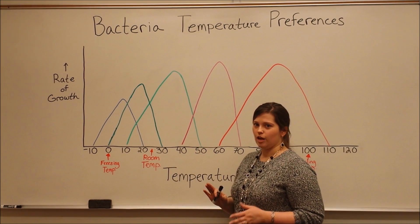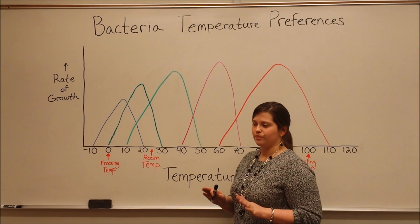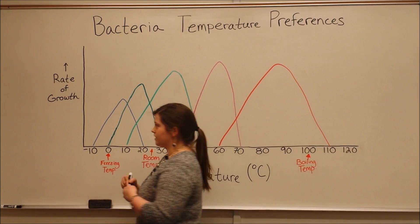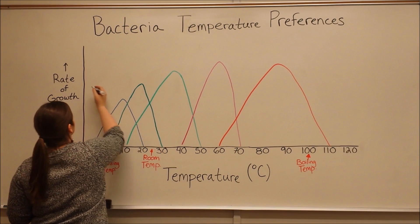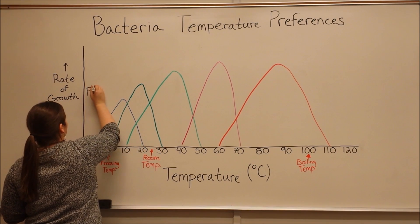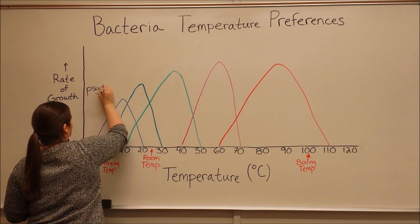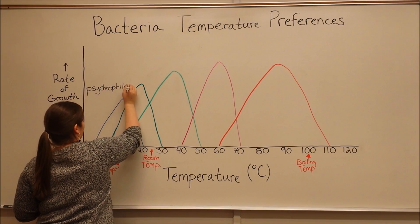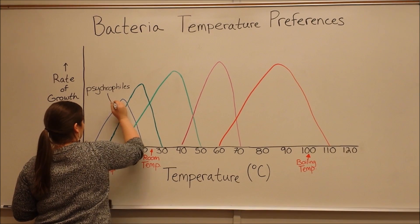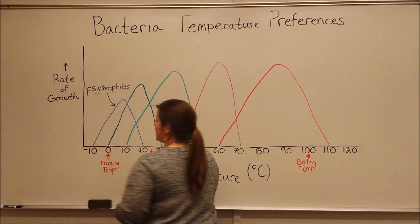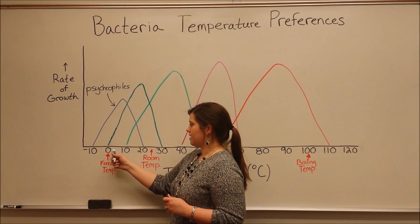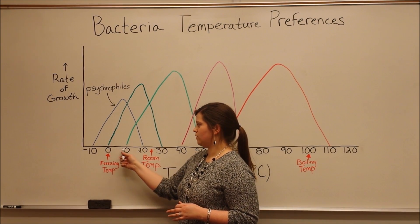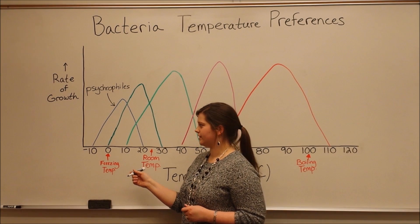So now let's start talking about those five classes of bacteria. The bacteria that grow in the coldest conditions are called psychrophiles. These are bacteria that can grow in freezing conditions. Their optimal temperature is between zero and ten, or even zero and fifteen degrees Celsius.